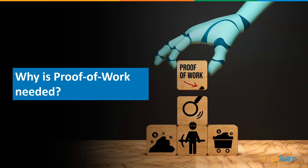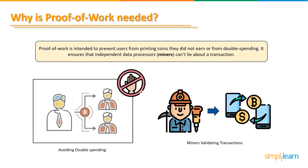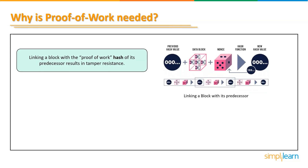Proof of work is primarily required for security, fraud prevention, and trust. It is designed to prevent users from printing coins they didn't earn or from double spending. If users could spend their coins more than once, the currency would effectively become worthless. Proof of work ensures that independent data processors, or miners, cannot lie about a transaction, by linking a block with the proof of work hash of its predecessor.